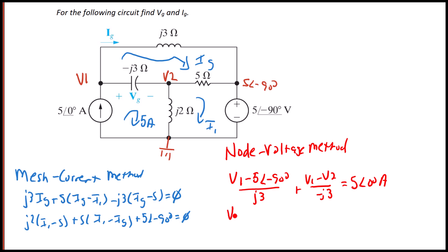If I do KCL at V2, I'm going to have V2 minus V1 over negative J3 plus V2 over J2 plus V2 minus five angle negative 90 degrees over five, and that equals zero.